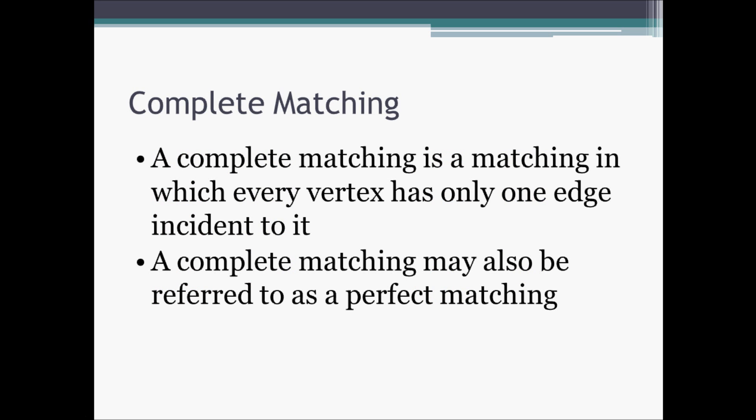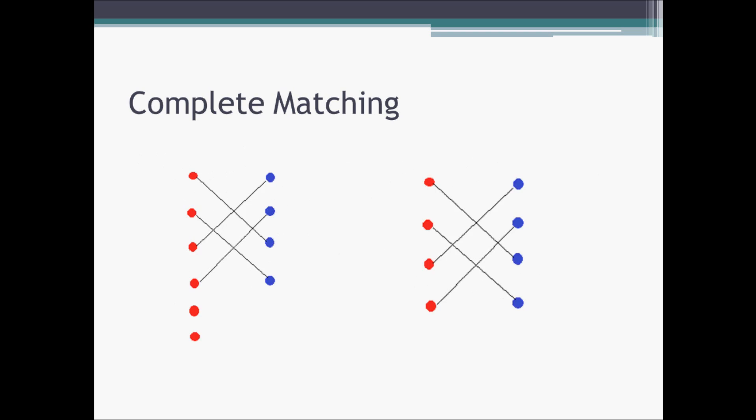Now that we know what a matching is, we can talk about a more specific type: a complete matching. By definition, a complete matching is one in which every vertex has exactly one edge incident to it. It is important to note that a complete matching may also be called a perfect matching. The graph on the right is a perfect matching because every vertex has one edge incident to it, while the graph on the left is not a perfect matching because the bottom two red vertices have no edges incident to them.